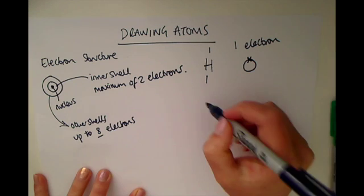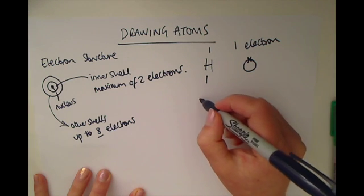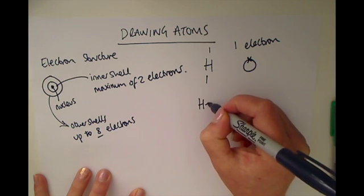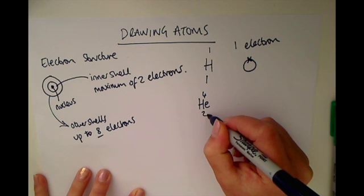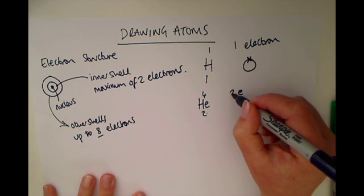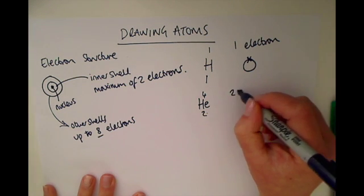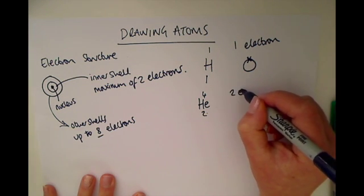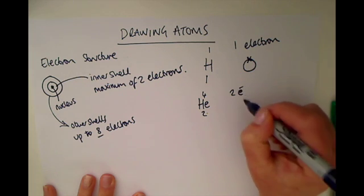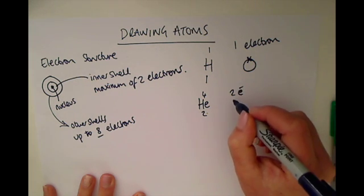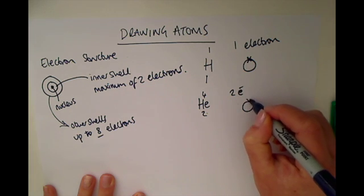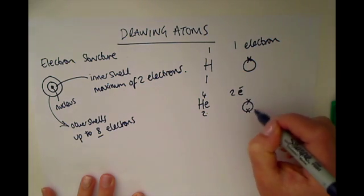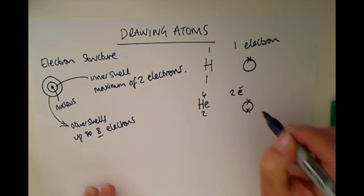If we look at the next biggest element, we've got helium. Helium has a proton number of two, so it has two electrons. Therefore it again only has one shell and it has two electrons in that inner shell.